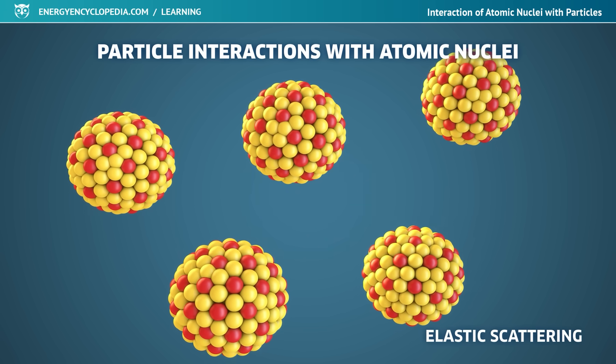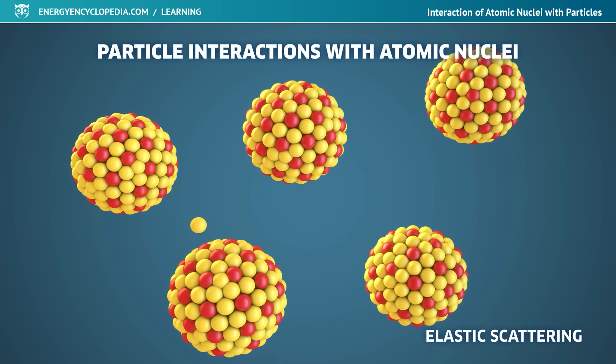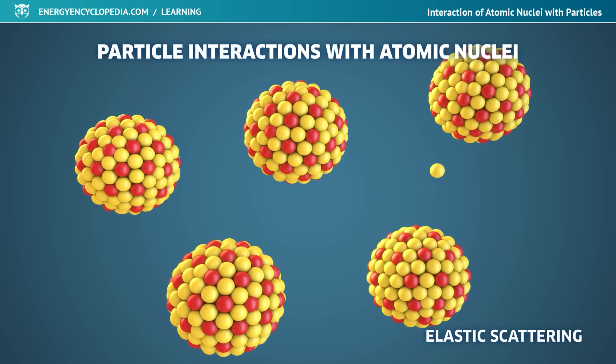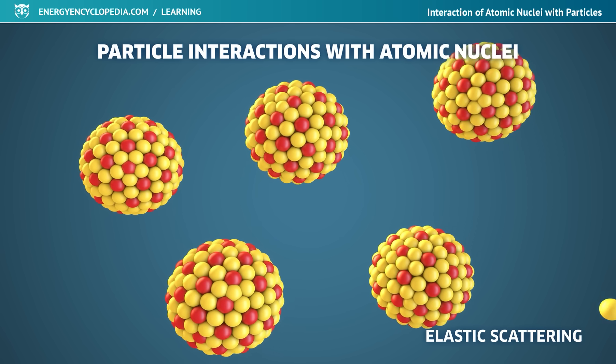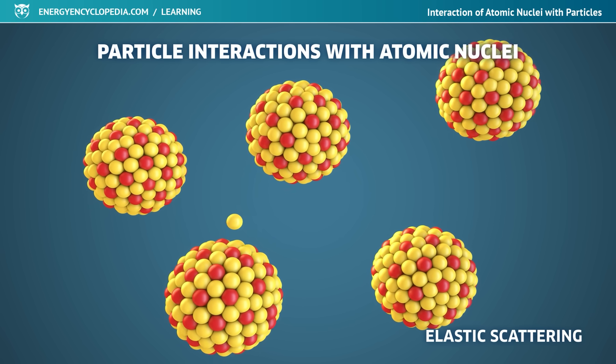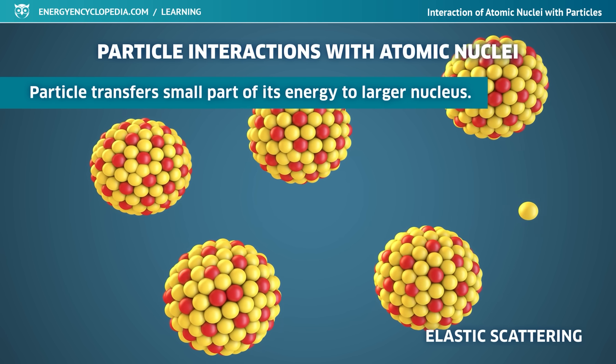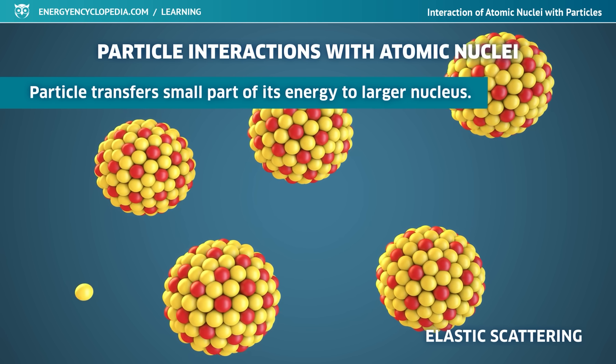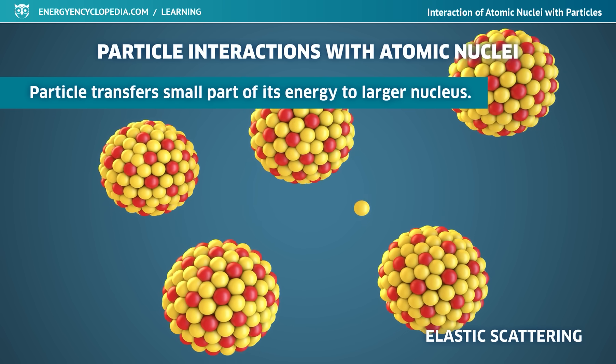During elastic scattering, the direction of the flying particle's path changes in the force field of the nucleus in accordance with the laws of conservation of energy and momentum. After the interaction, the particle continues to move with lower energy and momentum, a small part of which was transferred to the more massive nucleus.